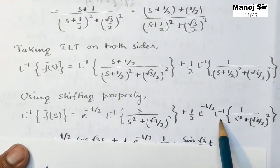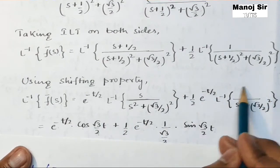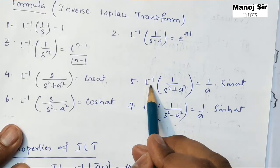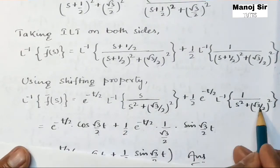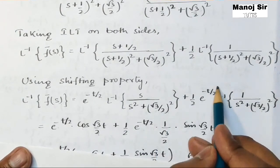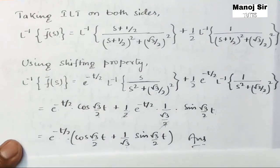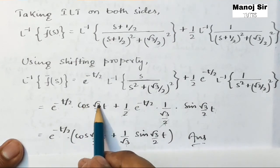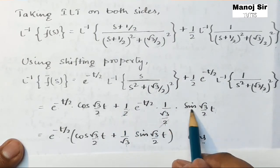For the second term, we apply formula number 5: the inverse Laplace transform of 1 upon (s² + a²) = (1/a)·sin(at), where a = √3/2. So we get (1/2)·e^(−t/2)·(1/(√3/2))·sin(√3/2 · t). The 2's cancel, giving (1/√3)·sin(√3/2 · t). Taking e^(−t/2) common from both terms, the final answer is e^(−t/2)·[cos(√3/2 · t) + (1/√3)·sin(√3/2 · t)].